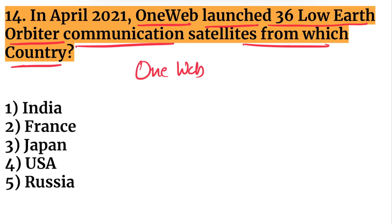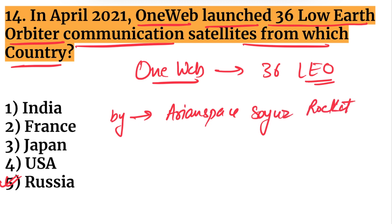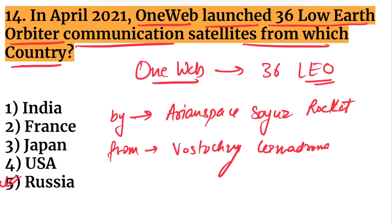In April 2021, OneWeb launched 36 low earth orbit (LEO) communication satellites from which country? They were launched from Russia, specifically from the Vostochny Cosmodrome, using an Arianespace rocket.